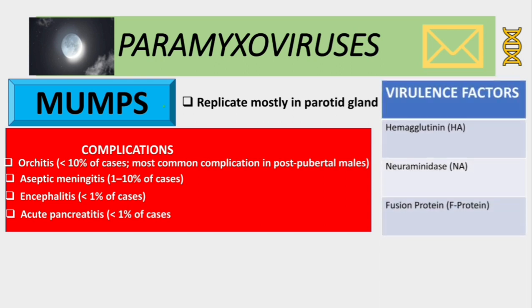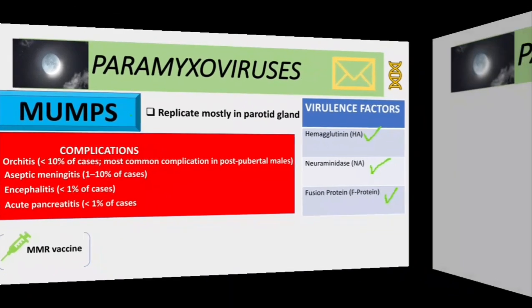On virulence factors, mumps has all three: hemagglutinin, neuraminidase, and fusion protein. And again, the MMR vaccine applies here.